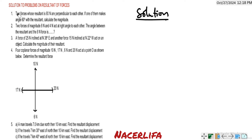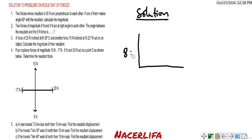The second question says: two forces of magnitude 80 Newton and 4 Newton act at right angles to each other. The angle between the resultant and the 80 Newton force is what? For the solution, we have the two forces — 80 Newton and 4 Newton — acting at right angles.